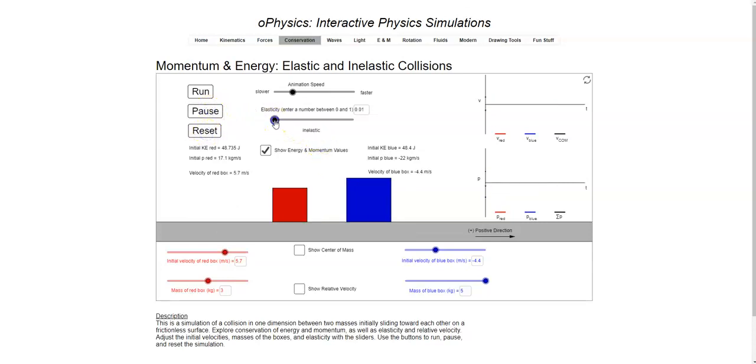So if you want an elastic collision, you send the elasticity all the way up to one. They bounce off of each other. If you want an inelastic collision where they stick together, bring the elasticity down to zero, and they stick together.